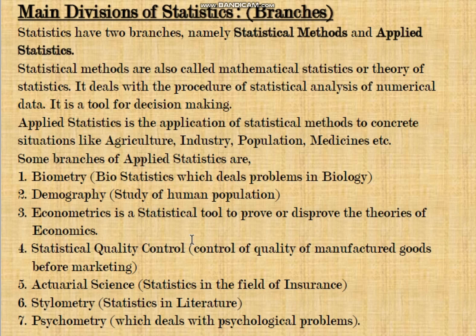The fifth branch is actuarial science, which is the application of statistical techniques and tools in the field of insurance. This includes designing policies like mutual funds, accidental insurance, vehicular insurance, or health insurance.